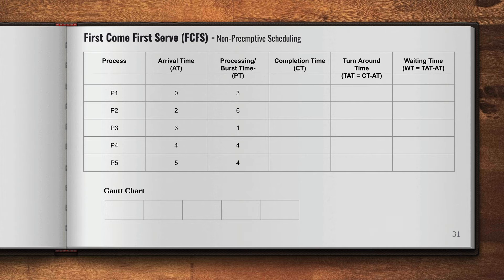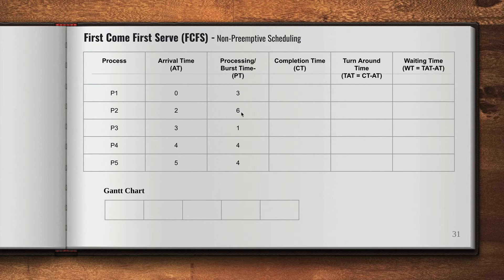Let's take an example. In an examination, the problem will give you processes P1 through P5, with an arrival time — meaning at what time unit each process entered the ready state — and a processing time or burst time, which is how much time each process takes to finish its execution. For example, P1 takes 3 units of time, P2 takes 6 units of time, and so on. The unit of time could be seconds or minutes. The question will ask you to calculate the completion time, average turnaround time, and waiting time.